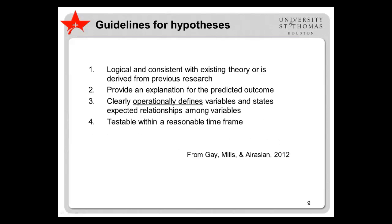Gay, Mills, and Erasian, authors of the text Educational Research: Competencies for Analysis and Application, provide guidelines for good hypotheses. They suggest that hypotheses should be logical and reasonable — either consistent with an existing theory or consistent with previous research. Hypotheses should provide an explanation for the predicted outcome. They should operationally define variables, which means defining variables in terms of how these will be measured. And hypotheses should be testable within a reasonable time frame — if it would take 25 years to determine whether a hypothesis is supported, the hypothesis is weak.